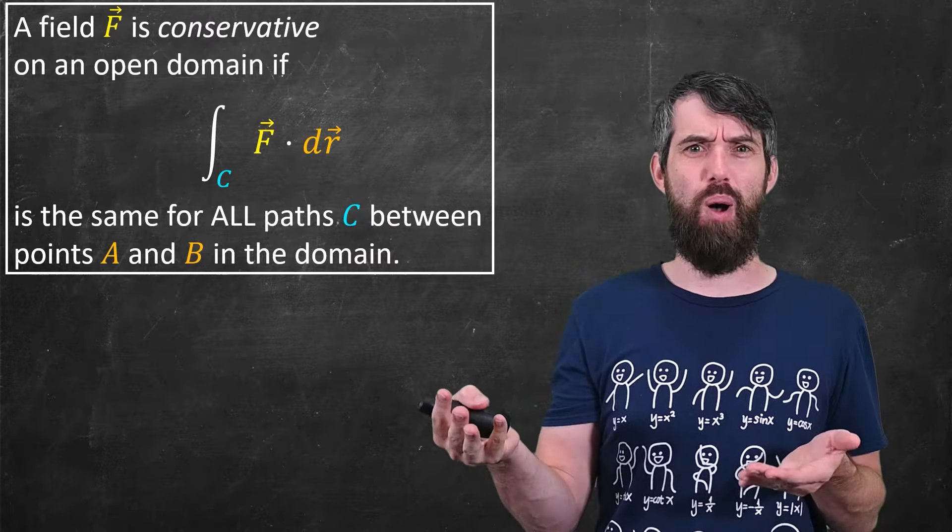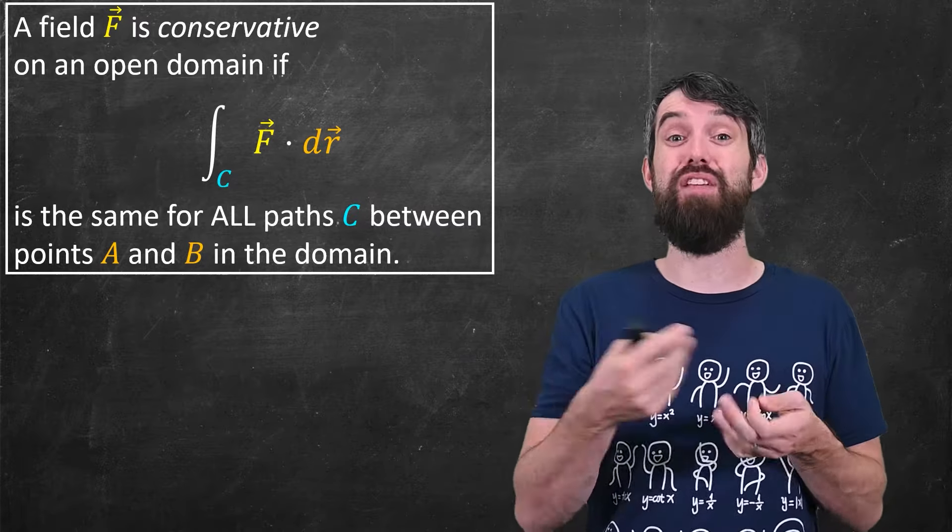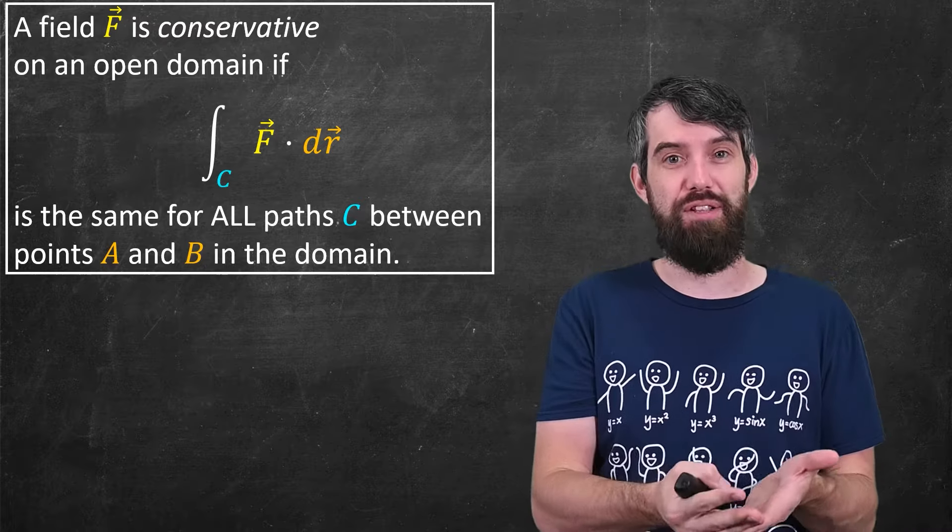For example, if I go off in some weird spot, and then around a whirlpool a hundred times, and then on to my point b, that's going to be different than if I went directly to my point b, or at least it could be depending on the velocity field.